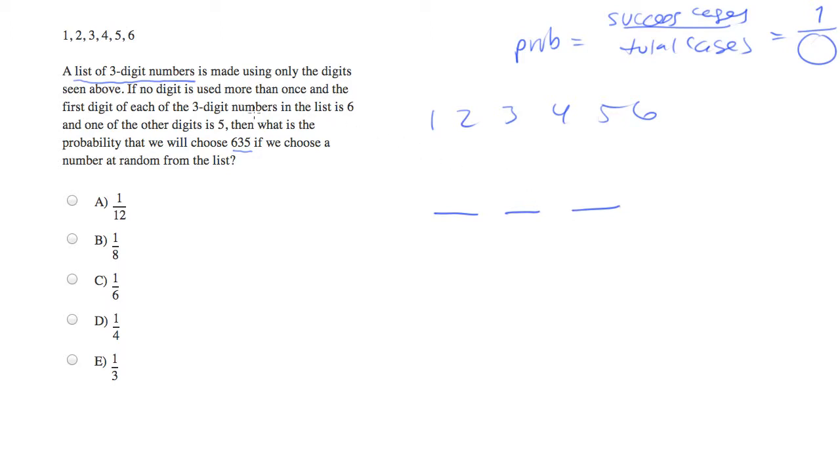And one of the things the problem says is the first digit of the number is always 6. So we're guaranteed to put a 6 in here, and the 6 has already been chosen. So that's really not even part of our problem. We don't even have to count that.